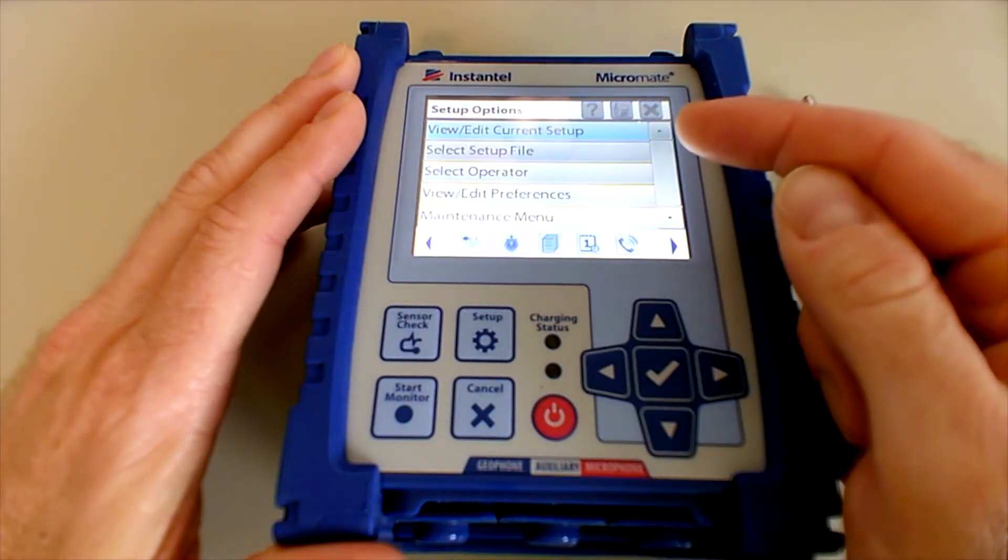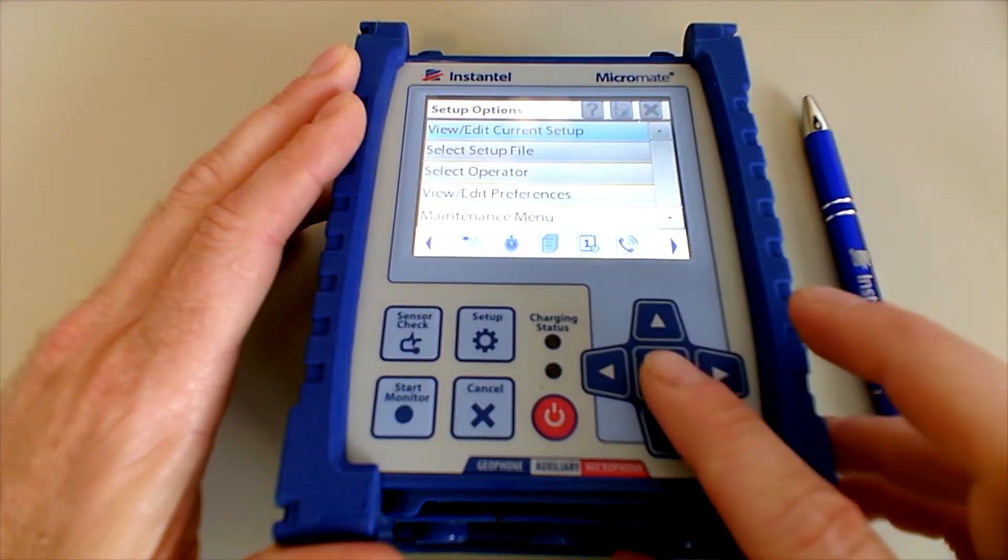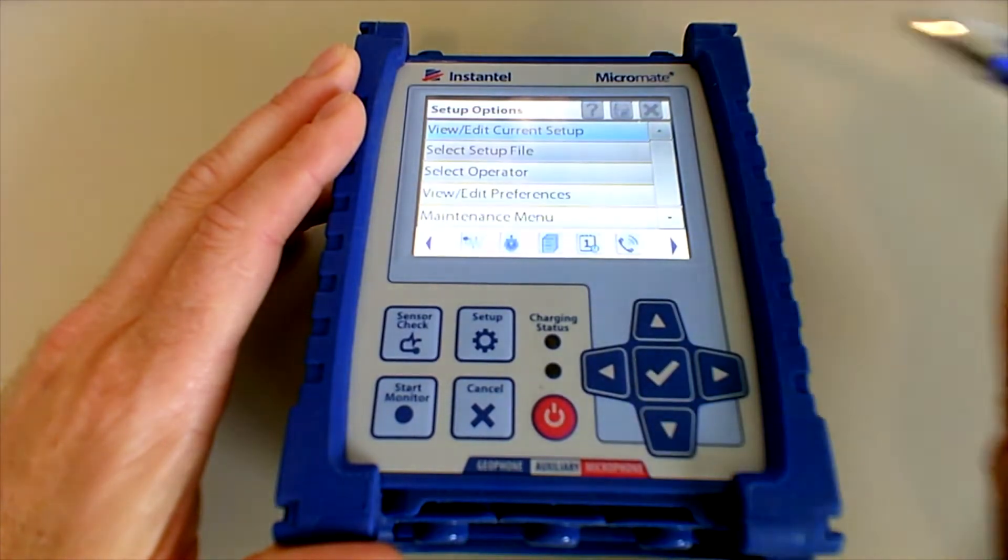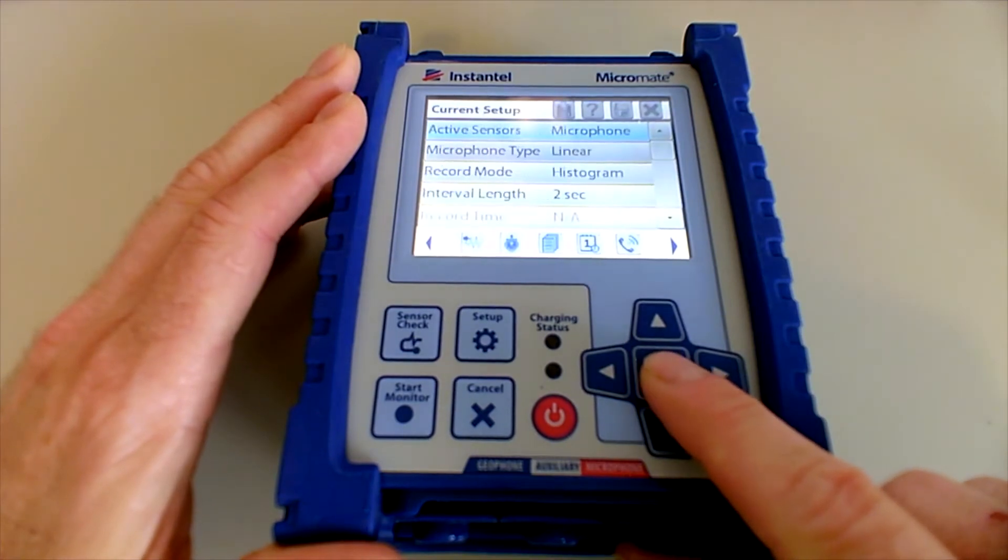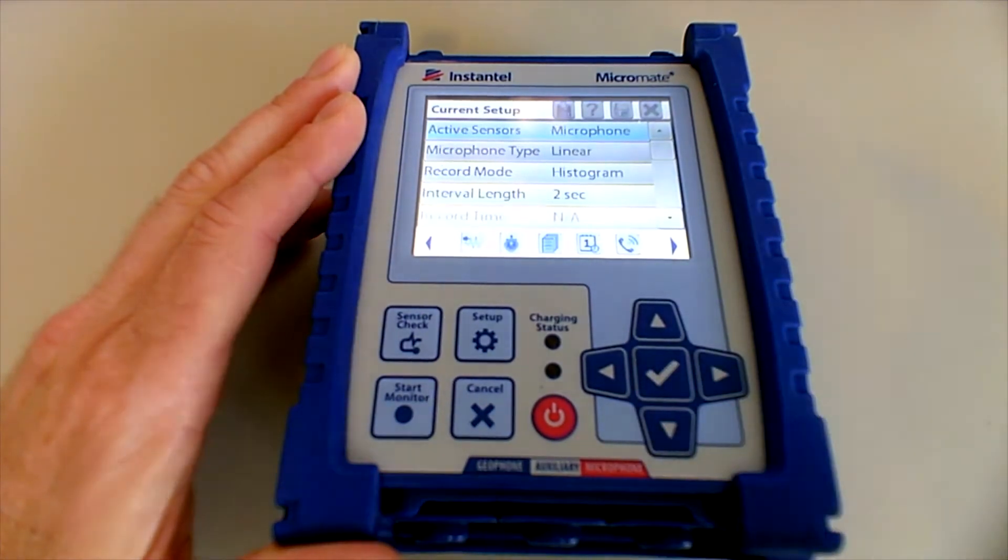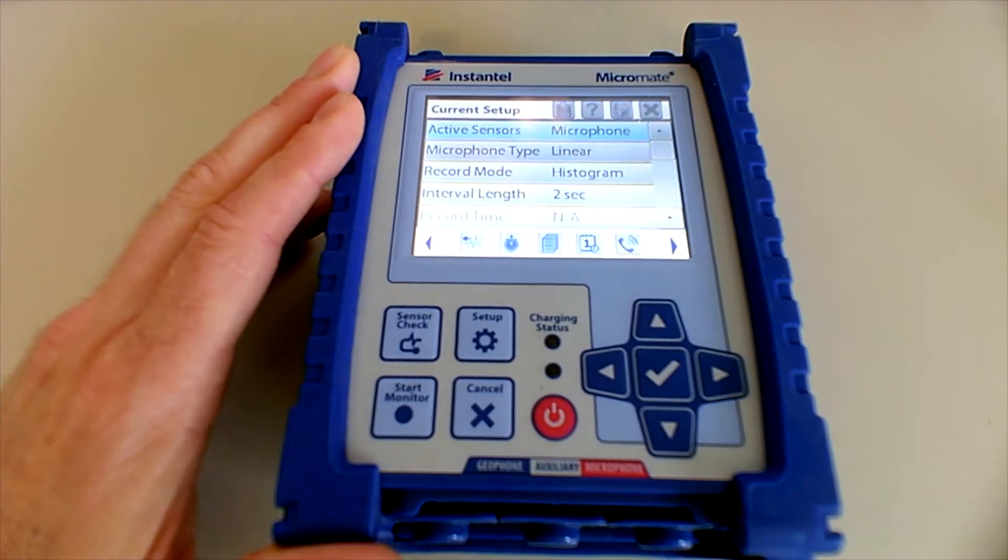We're going to choose view edit current setup. So you choose that either by touching the screen or by pressing the checkbox. Now on the screen you'll see all of your setups that you will have already set up or that we will have set up for you before your rental.